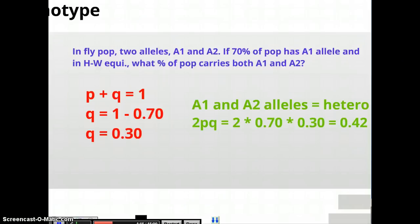Let's use this as an example. If we look here, two alleles, A1 and A2, let's assume this is dominant and this is recessive. So 70% of the population has an A1. Well, we know right there that P equals 0.7. From that, we can figure out that Q equals 0.3. And they ask, what percentage of the population carries both A1 and A2?